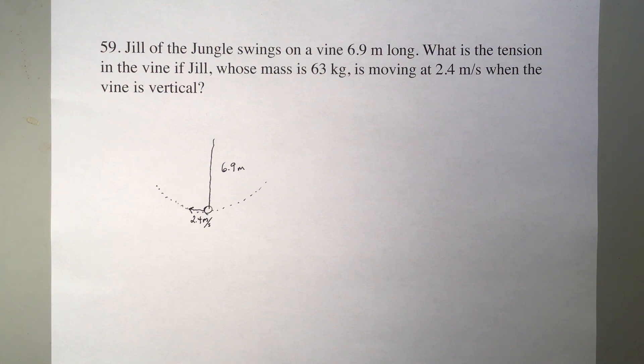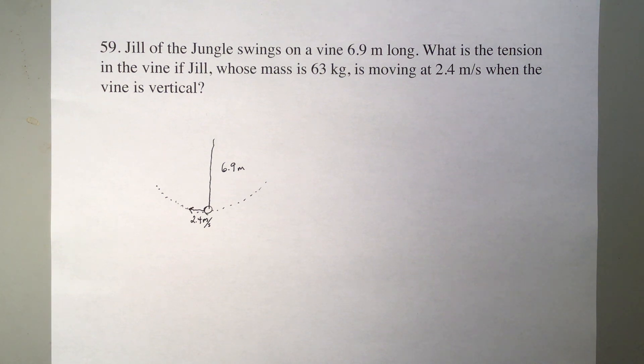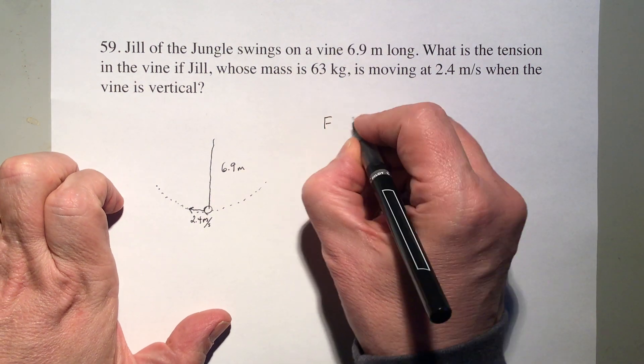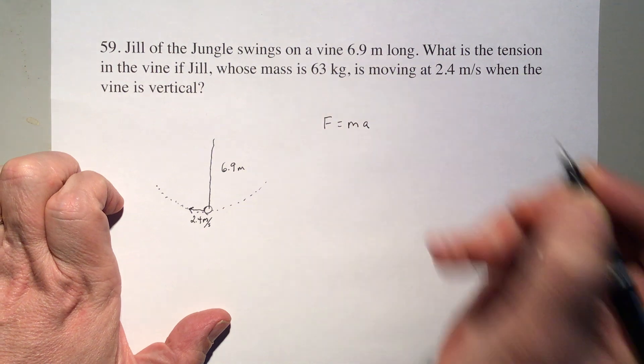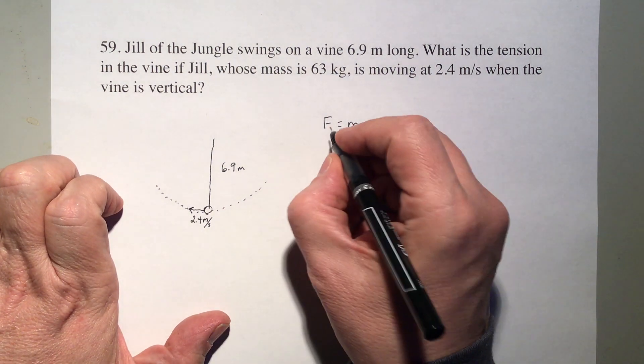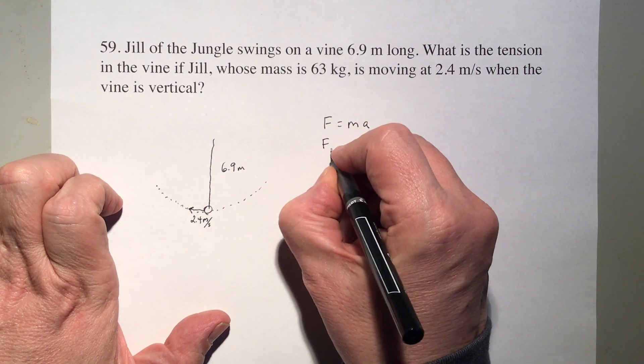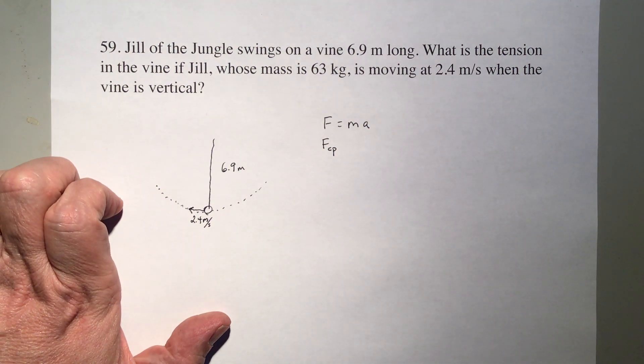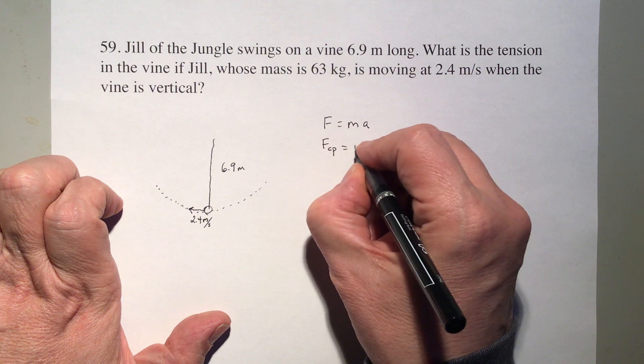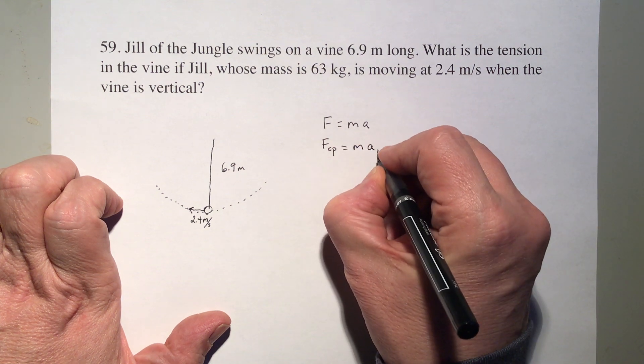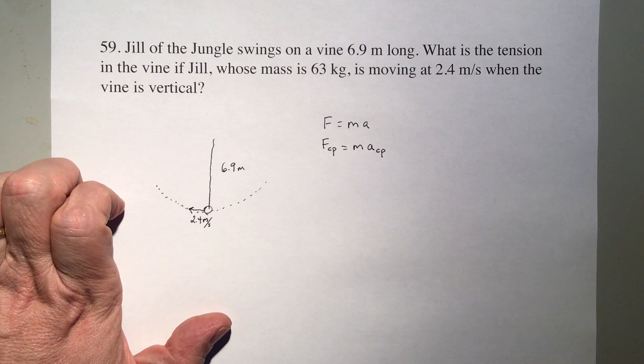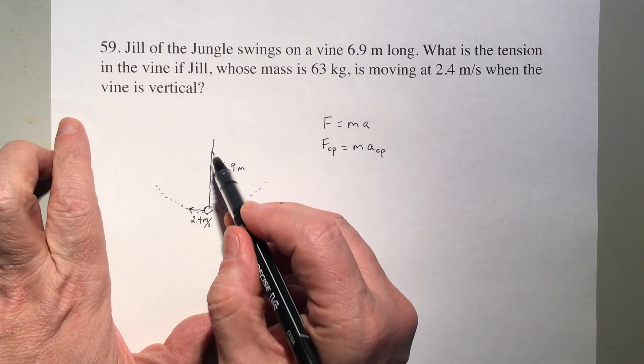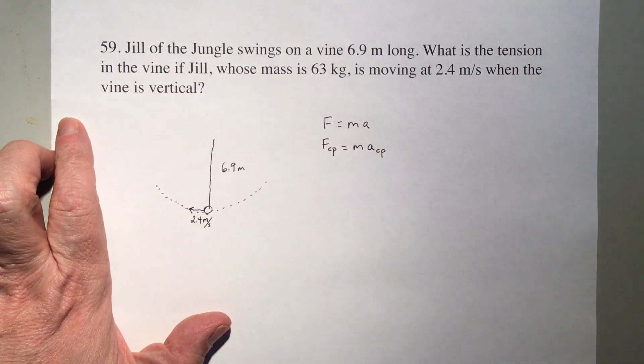So we are in circular motion, which is just like any of Newton's second law. We start with force equals mass times acceleration. We end up with a force towards the center of the circle called centripetal force, and it equals mass times centripetal acceleration, which is also towards the center. Both of these are vectors towards the center here.